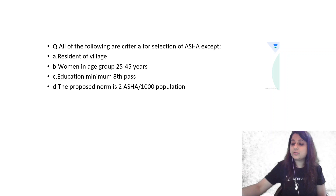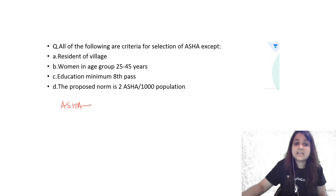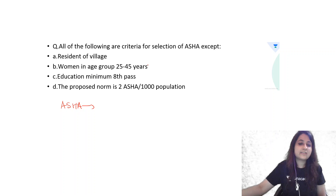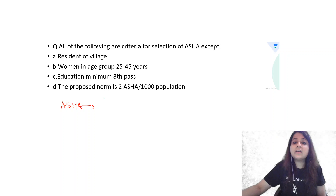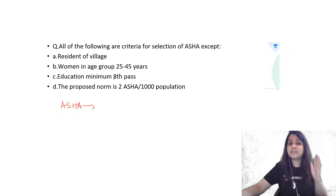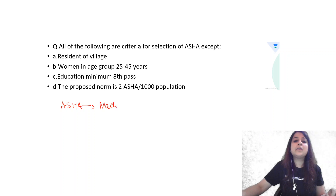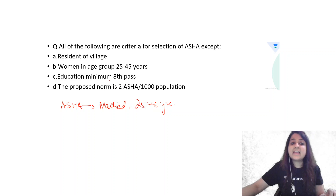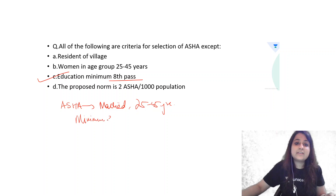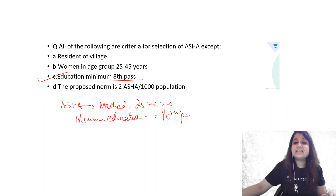This is a very important question. To answer it, we need to know about ASHA workers and the criteria for their selection. An ASHA worker has to be a resident of that village. She is a woman in the age group 25 to 45 years — she can be married, divorced, or separated. Now, education: 8th pass? No. There was a change — the minimum education required for an ASHA worker is now at least 10th pass.